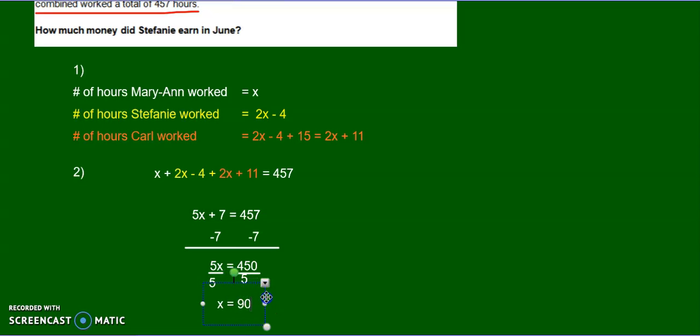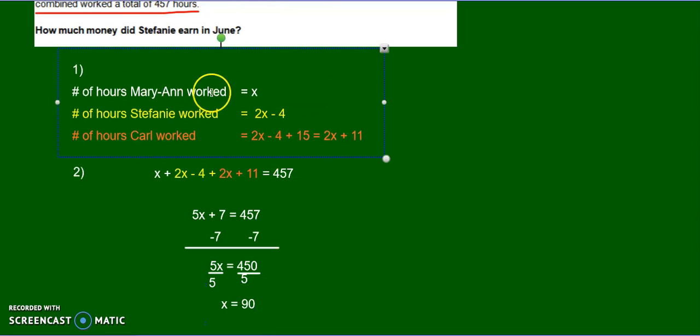So now we know what x is equal to. And what did we say x was? Well, we said x was Marianne's age. Not her age, but how many hours she worked. So she worked 90 hours.